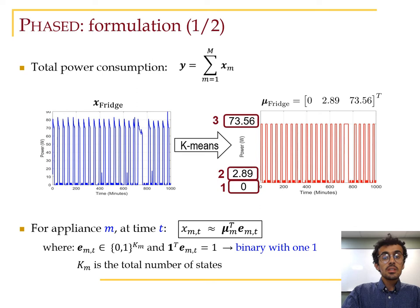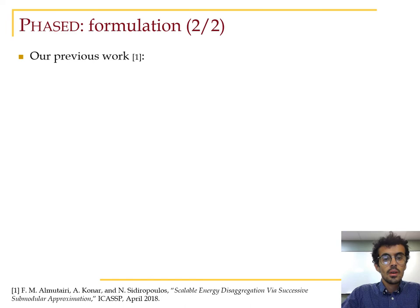Now, for a given appliance m and at a given time t, x can be well approximated as the inner product of this power profile factor μ and a binary factor e with only one 1 to select the right state. Thus, if we know the power profile factor, the problem boils down to a combinatorial optimization where the goal is to select the right state at a given time.